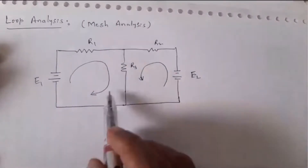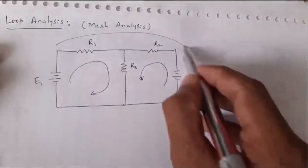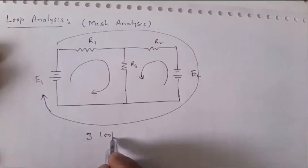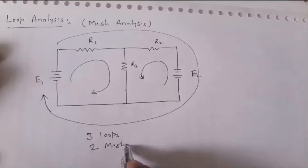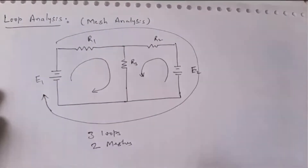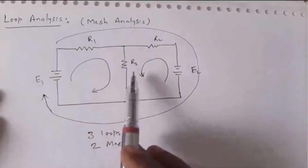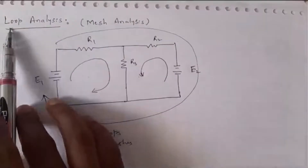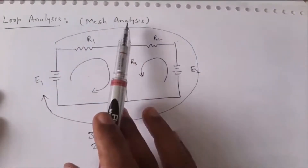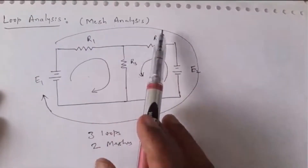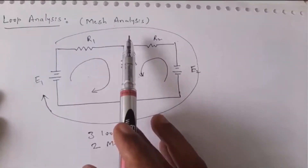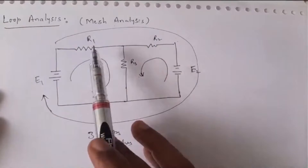In this network there are three loops — this is one loop, this is another loop, and this is the third one. So the network contains three loops whereas there are only two meshes, because a mesh is a loop which doesn't contain any other loops inside it. Loop analysis is also called mesh analysis and is one of the ways to analyze a given network — given element values, we find the currents through resistors.